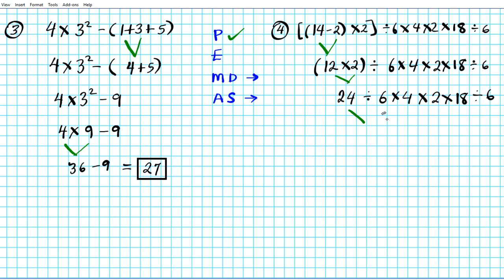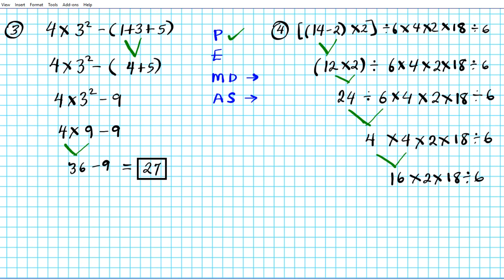24 divided by 6 is the leftmost operation — 24 divided by 6 is 4. So we have 4 times 4 times 2 times 18 divided by 6. Next, going left to right: 4 times 4 is 16, times 2 times 18 divided by 6. 16 times 2 is 32. So we have 32 times 18 divided by 6.